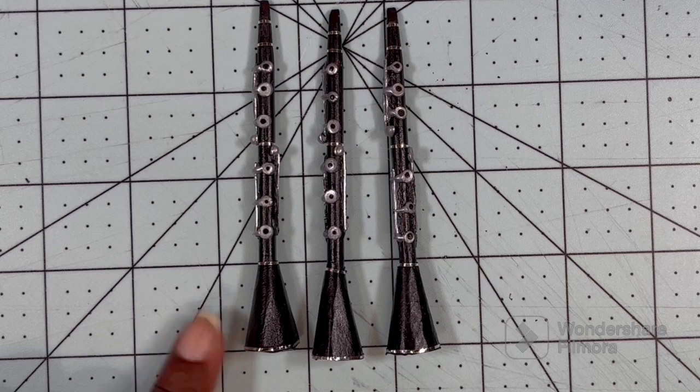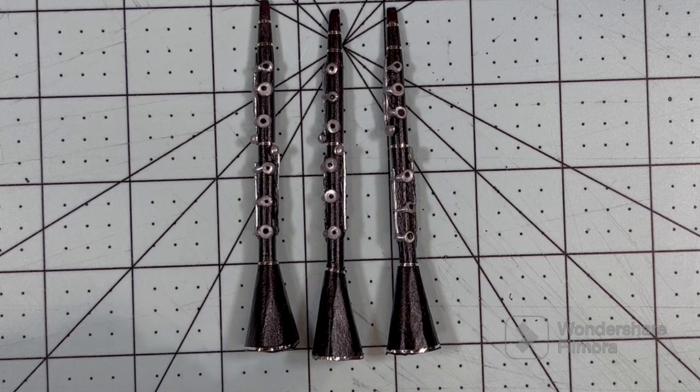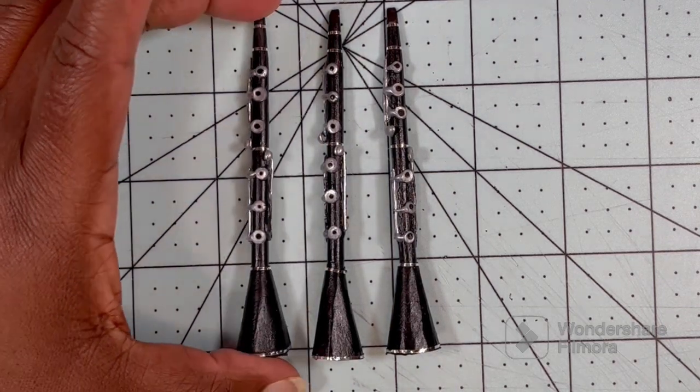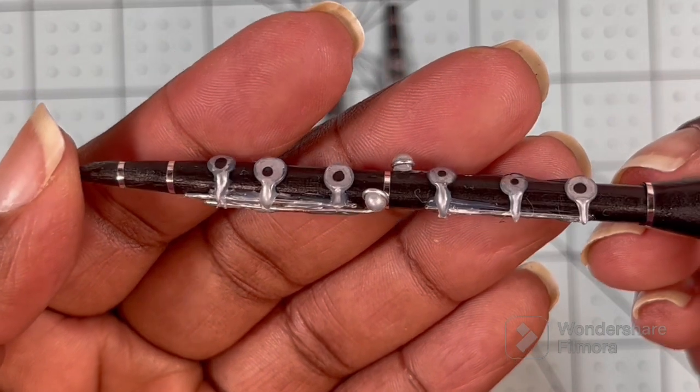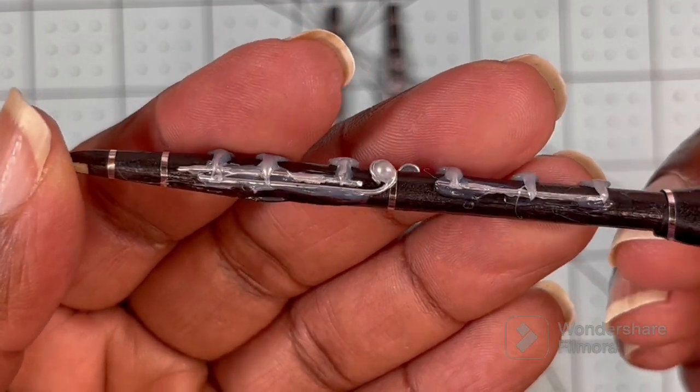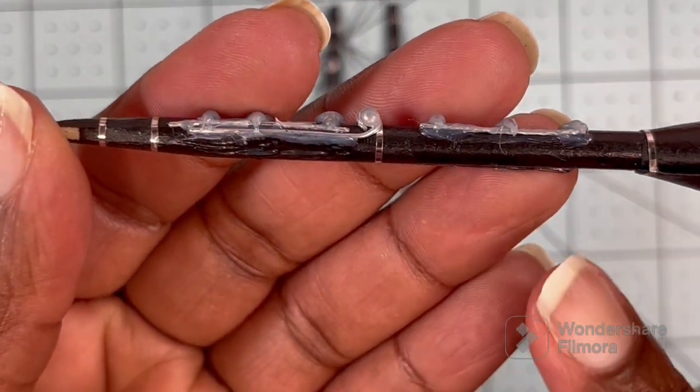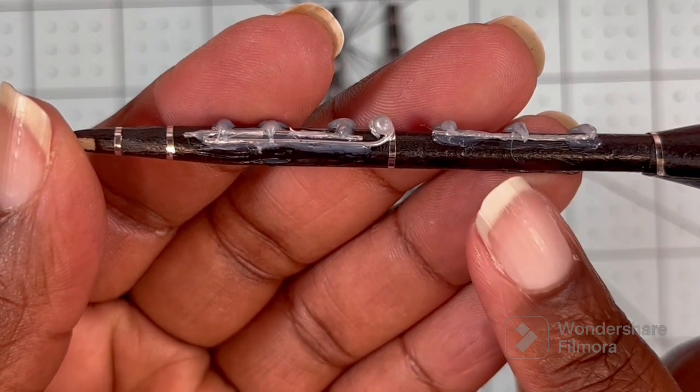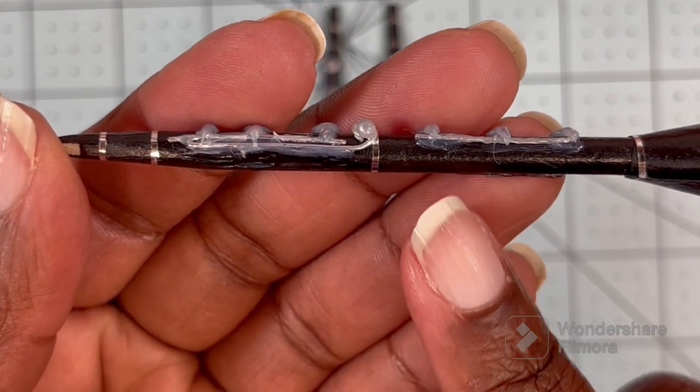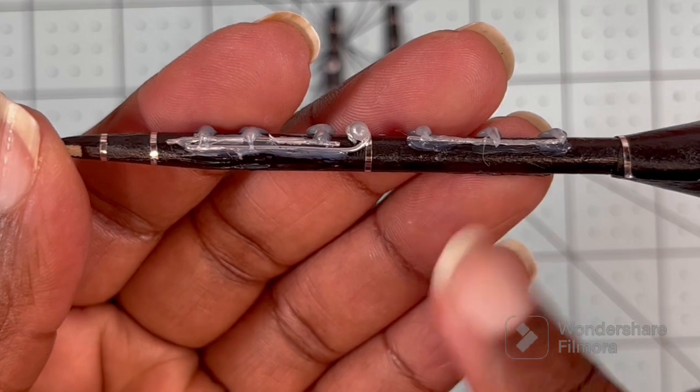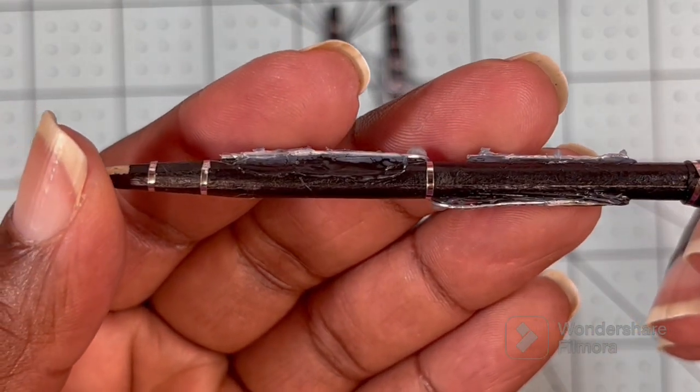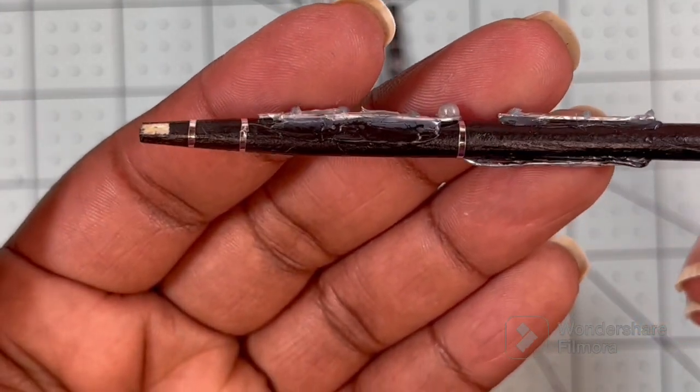I finished the clarinet and I made three to go into the music store. Here's a close-up and I think this one looks so much better than the one I made years ago. I did clean up the hot glue some. I went over the really rough spots with some black paint to help blend it into the rest of the clarinet.